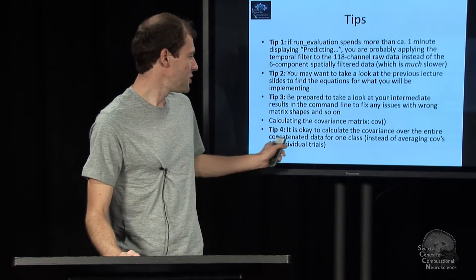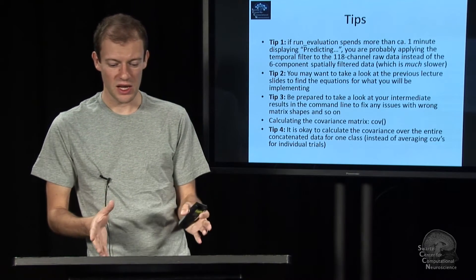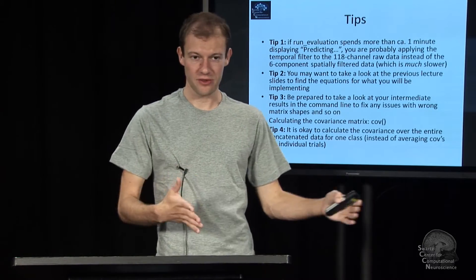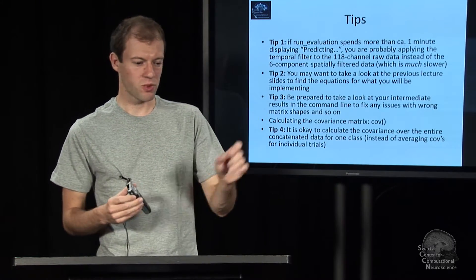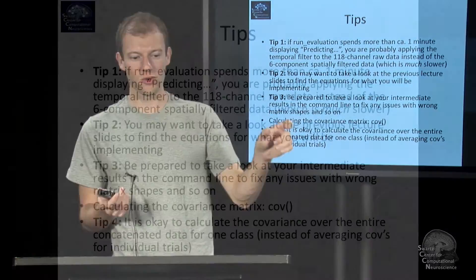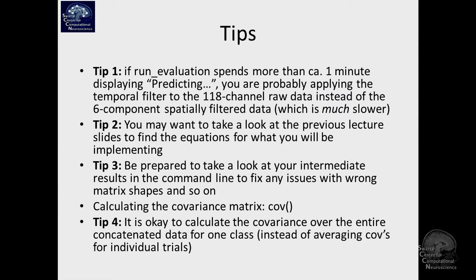And lastly, there are multiple ways in which you can get the covariance matrix of the data under one condition, such as left hand. You can either average it per trial, calculate the covariance matrix for each trial separately and then average that. Or you can, of course, also just calculate the covariance matrix for all the data under that condition. That's perfectly fine too. It's going to be a bit simpler. And that's all for this exercise, and I wish you good luck.